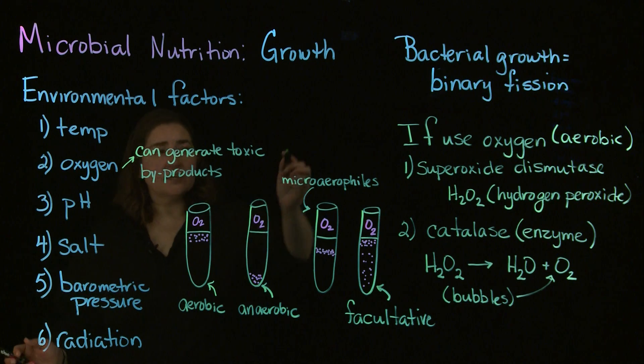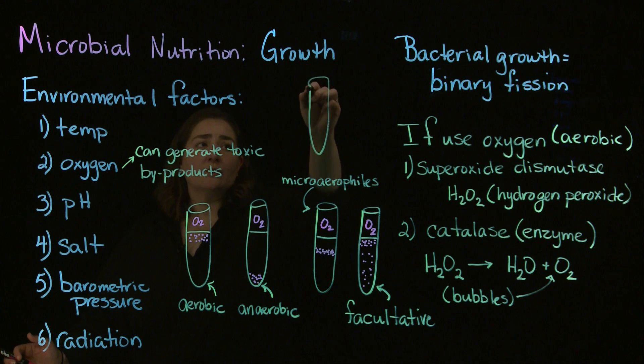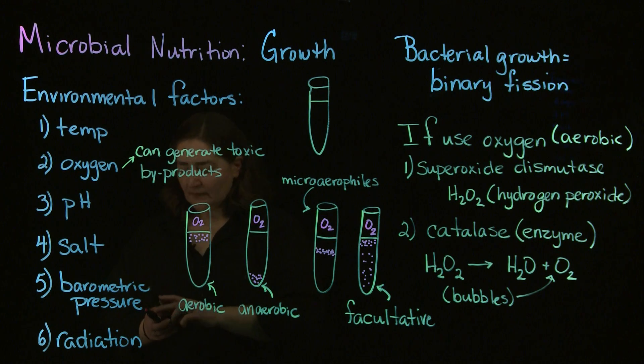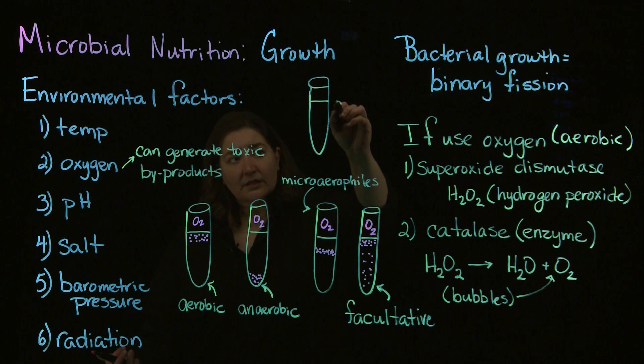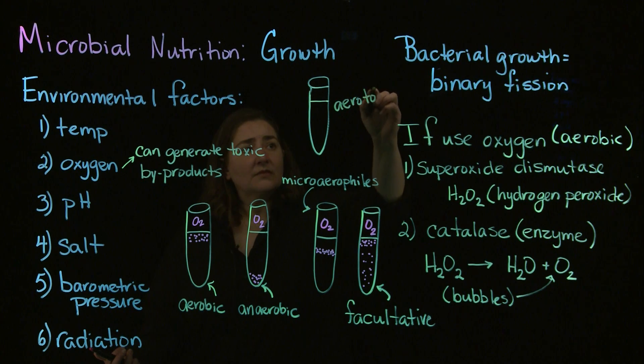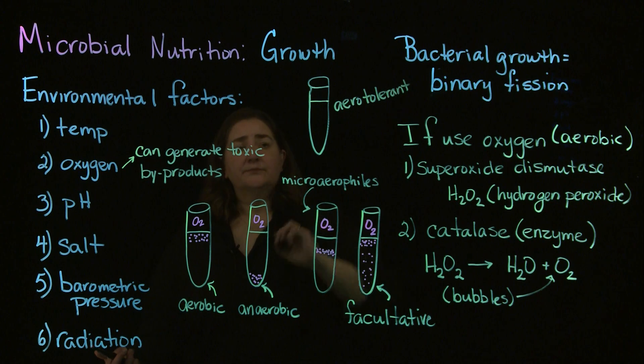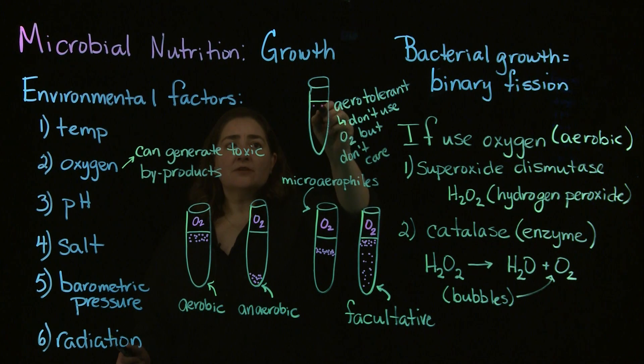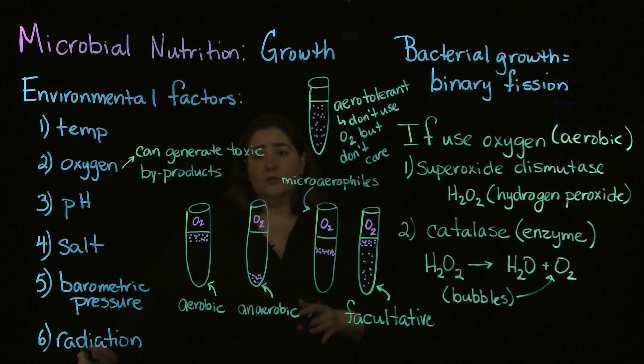Our last classification is aerotolerant bacteria. Aerotolerant bacteria typically don't use oxygen but also don't care if oxygen is there. If it's aerotolerant, you'll see bacteria dispersed evenly throughout the tube.